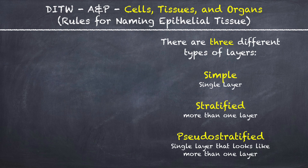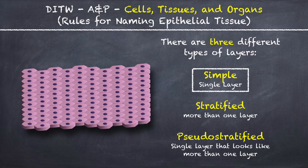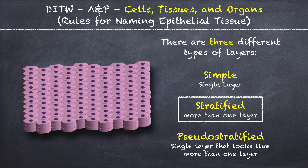There are three different types of layers to epithelial tissue. The first one is simple, which is a single layer of cells. The second is stratified epithelial tissue, which is composed of more than one layer of cells stacked atop each other.